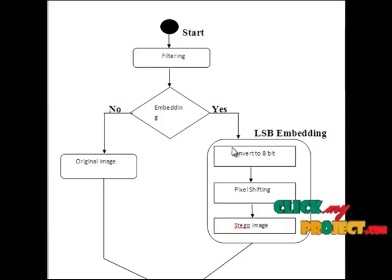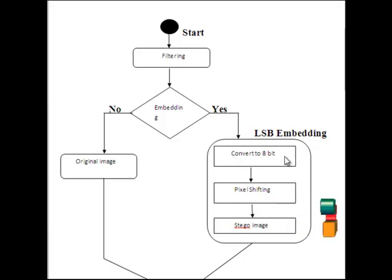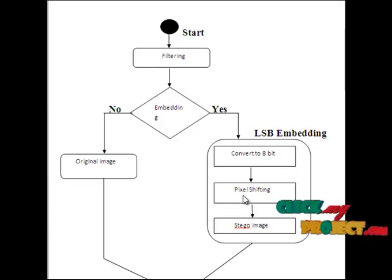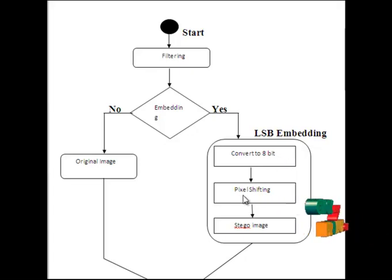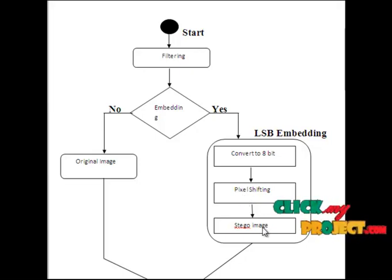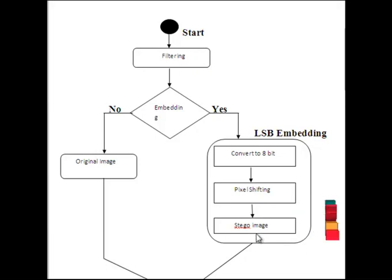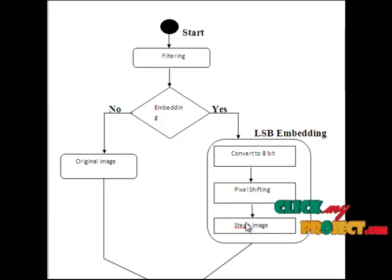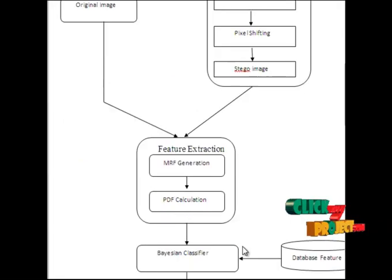This is the flow for LSP embedding. Initially, the LSP embedding converts the image to bits — the 8-bit representation is passed to the pixel shifting step, where the pixels are shifted. The shifted pixels are passed to the stego image, so the input image is hidden with the information. These two pieces of information are then passed to the feature extraction technique.